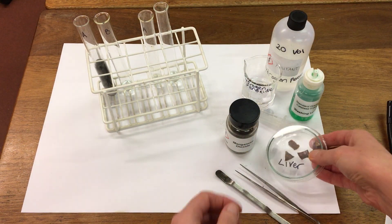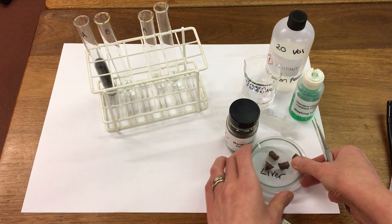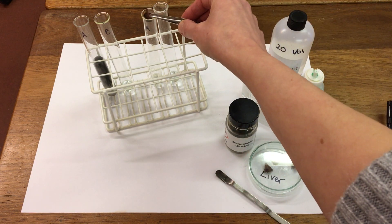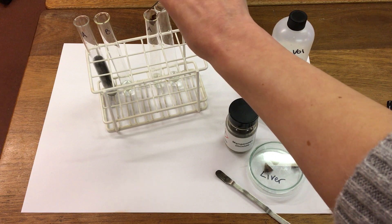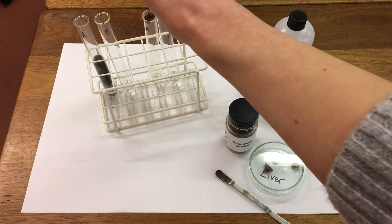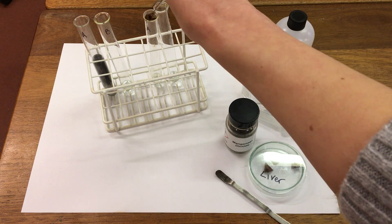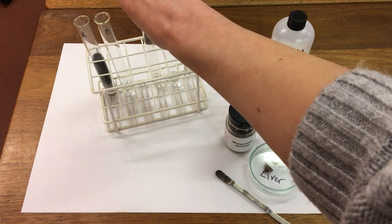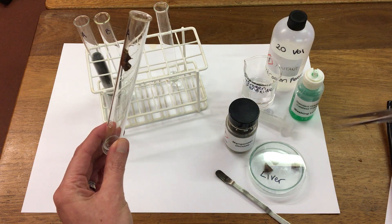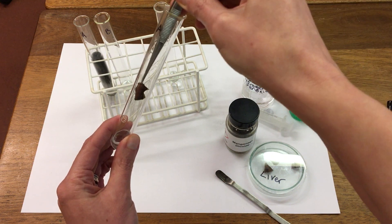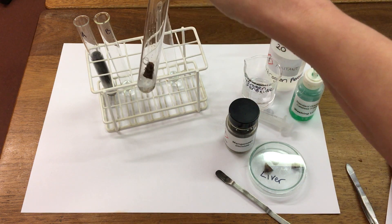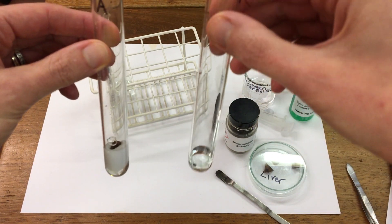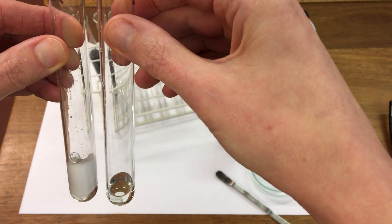Our next set we're going to use liver as our catalyst. So we'll take a piece of liver and pop it in and again compare it to a blank. This one's a little bit too big. There we go. So again we can see a foam being produced compared to the blank.